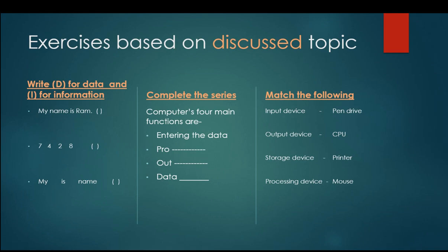First exercise. Write D for data and I for information. First sentence. My name is Ram. 7, 4, 2, 8. My is name. You have to mention which is the example of data and which are the example of information.